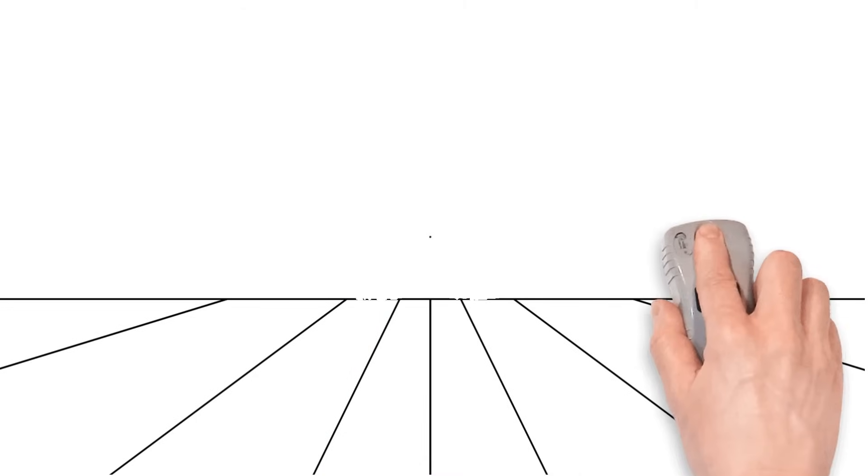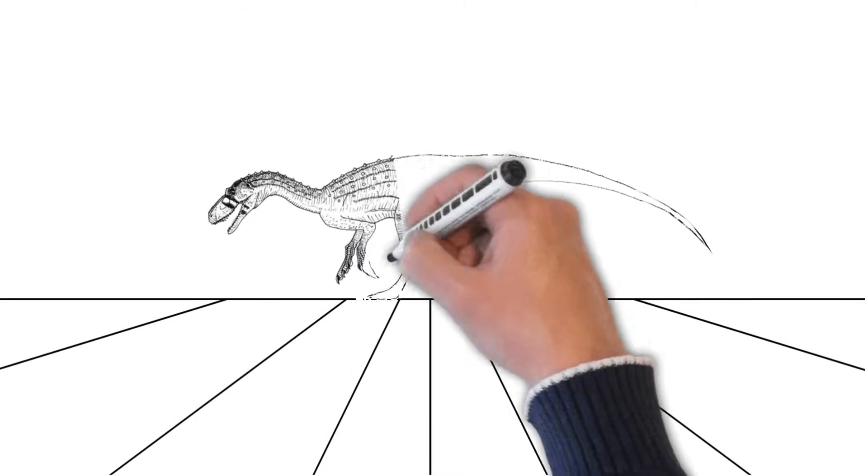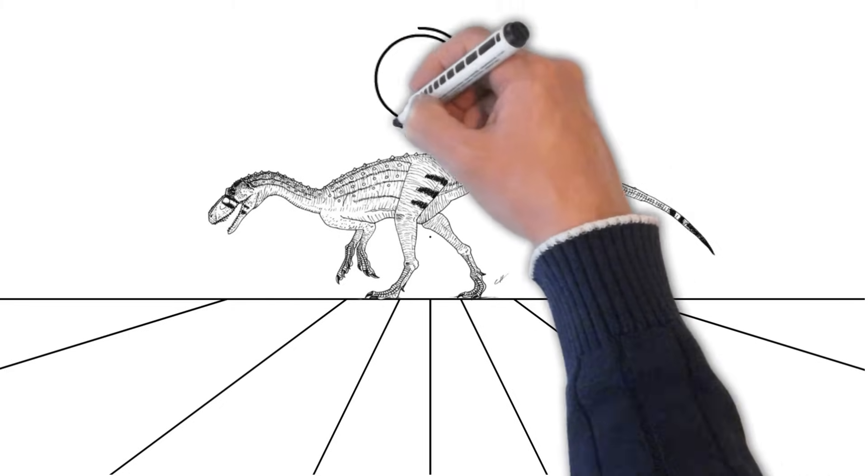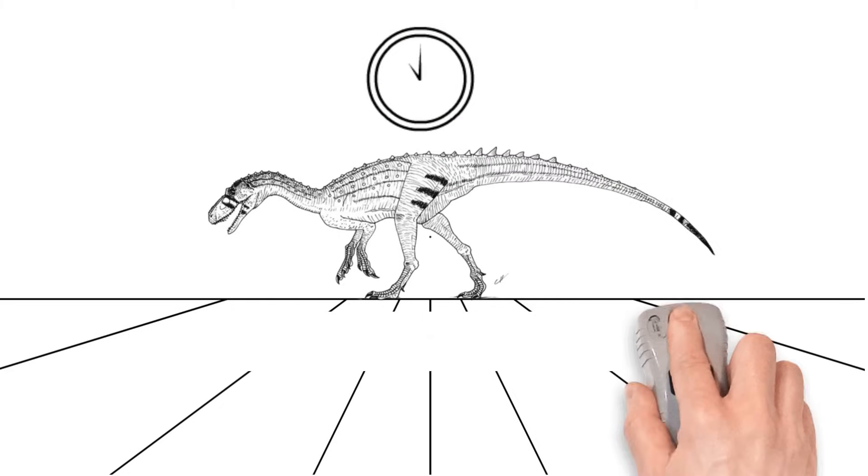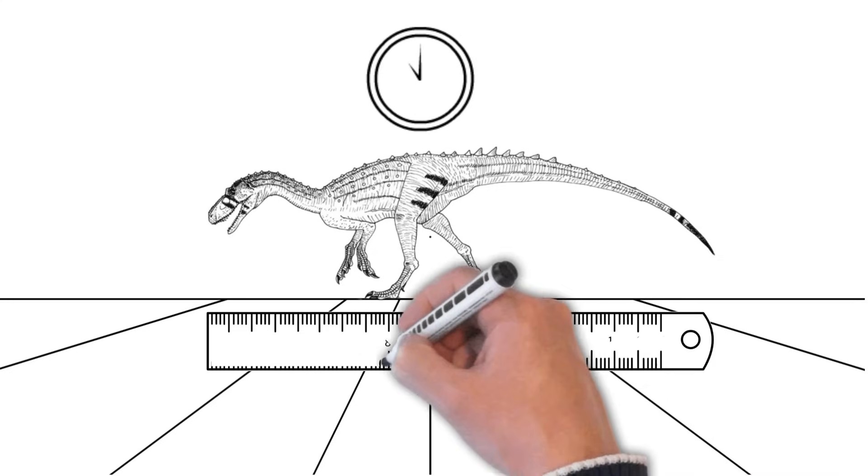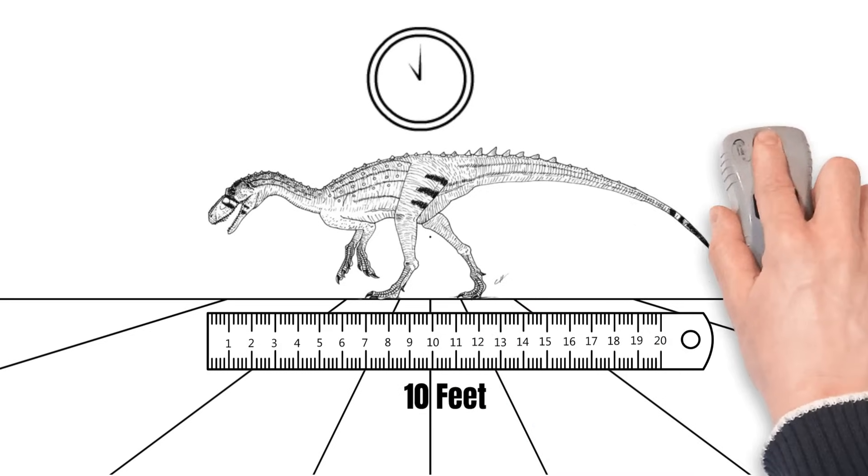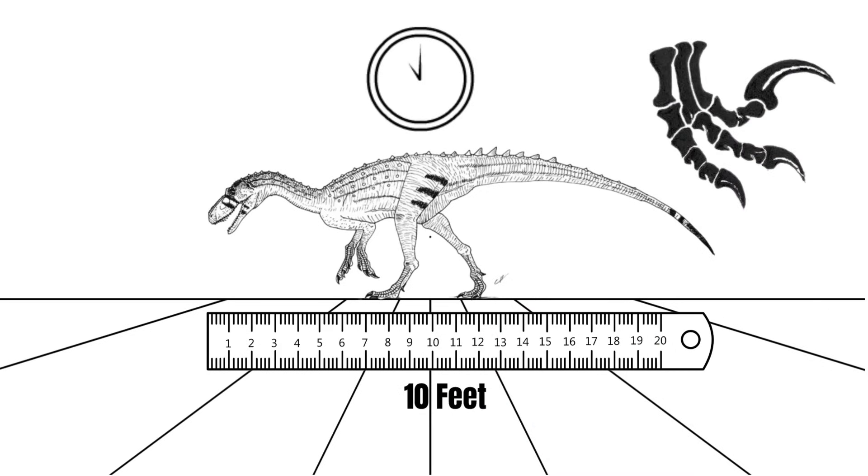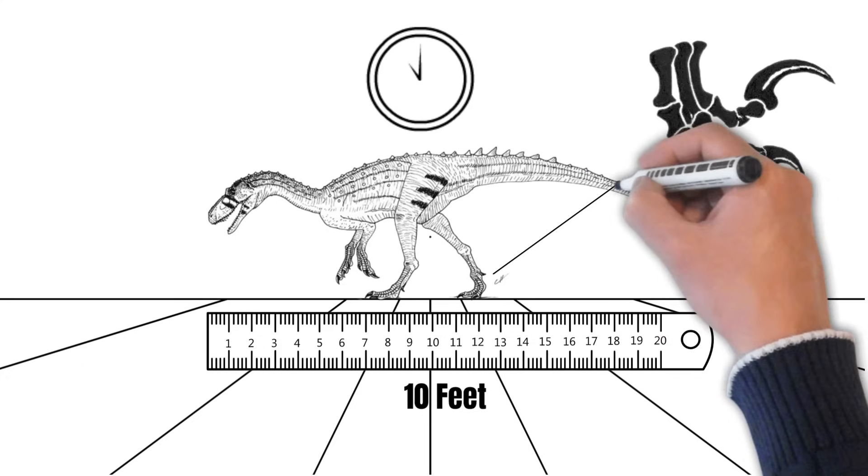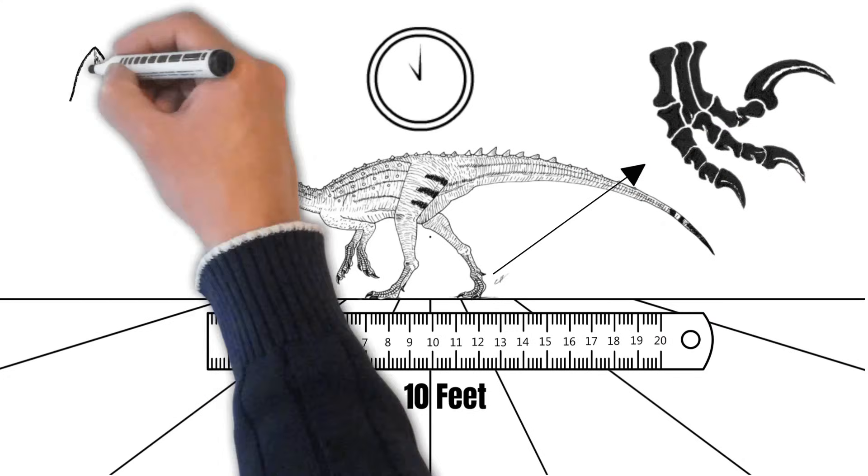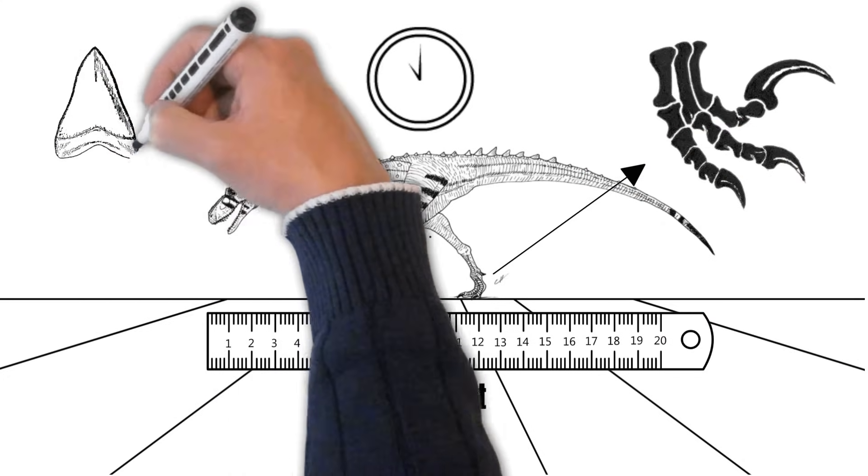Don't forget about Herrerasaurus, one of the earliest known dinosaurs. Herrerasaurus lived over 230 million years ago during the late Triassic period, making it one of the oldest dinosaurs ever discovered. It was a small, agile predator, about 10 feet long, that used its sharp claws and teeth to hunt small animals. Herrerasaurus roamed the ancient landscapes of what is now Argentina, marking the beginning of the age of the dinosaurs.